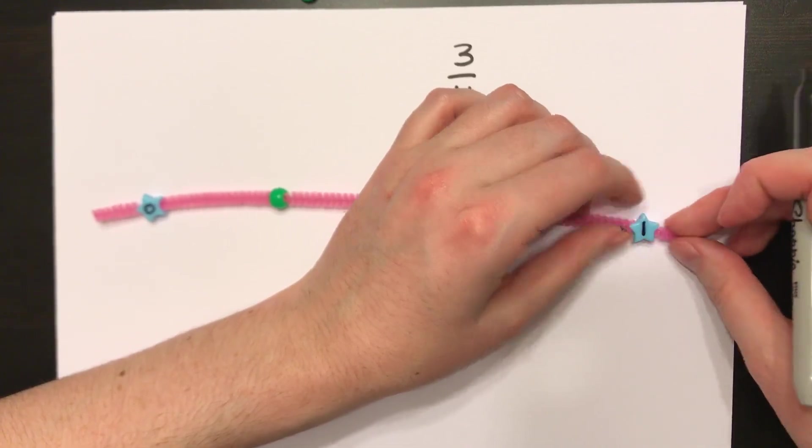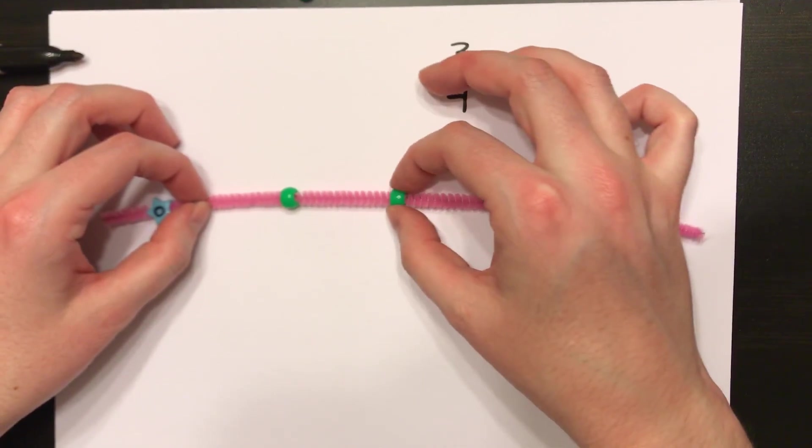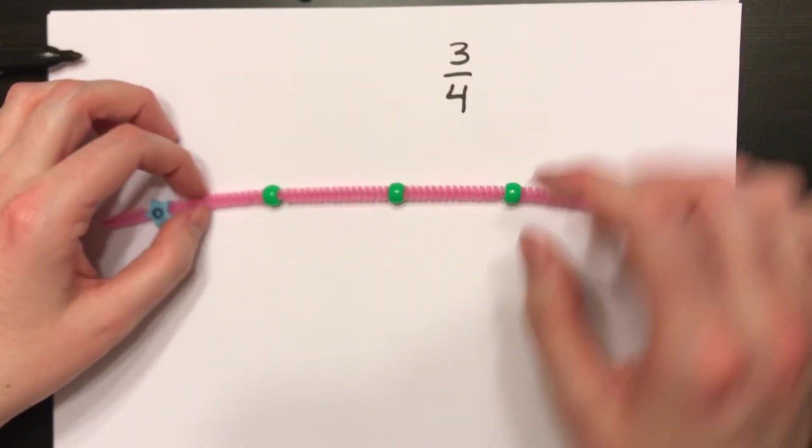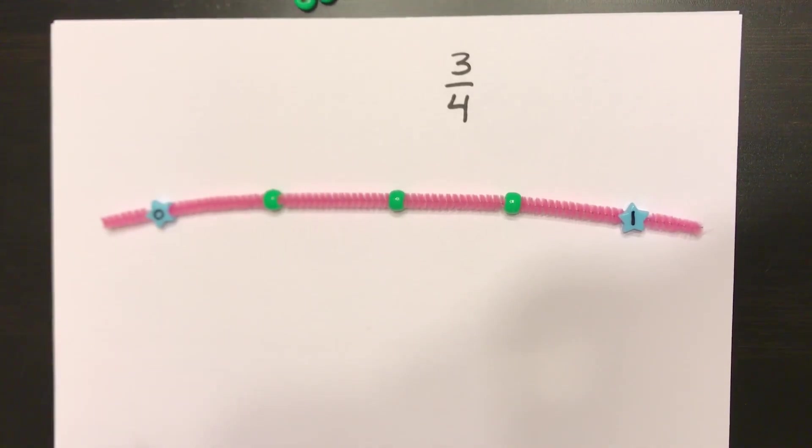If I can get it on there, there you go. Alright, now right now I don't have equal parts, so I have to move the beads until I have about four equal parts. 1, 2, 3, 4. Okay, I have four equal parts.